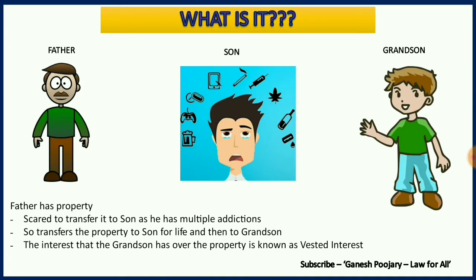So the father transfers the property to his son for life and then to his grandson. That way he gives life interest to the son and absolute interest to the grandson. But the grandson has not yet gotten possession — he only has interest over the property, which is known as vested interest. His possession is postponed for a certain number of years, but he definitely has interest over the property.